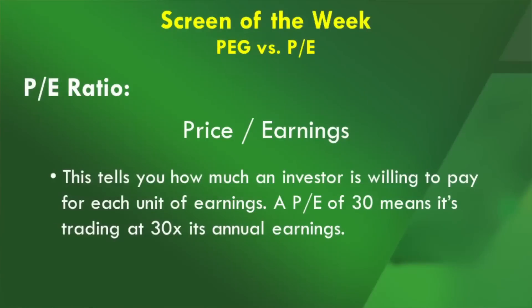Let's start with some basics. First off, P/E ratio — that is simply price divided by earnings, and essentially this tells you how much an investor is willing to pay for each unit of earnings. If a stock is trading at a P/E ratio of 30, it's said to be trading at 30 times its annual earnings. In general, a lower P/E ratio is considered to be better, and a common threshold that a value investor will typically use is a P/E ratio of 20.